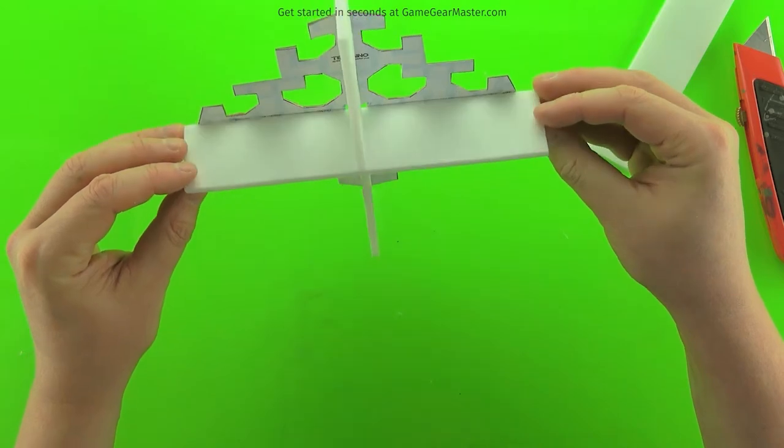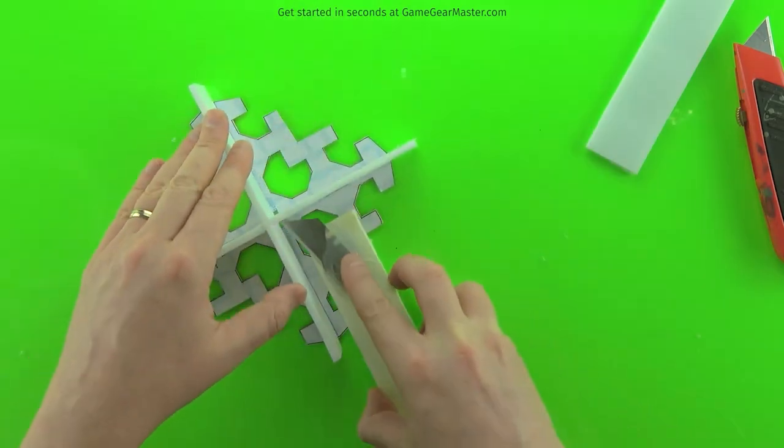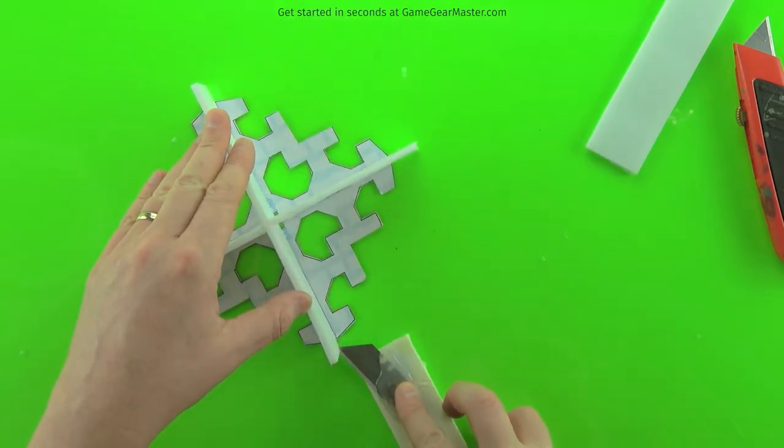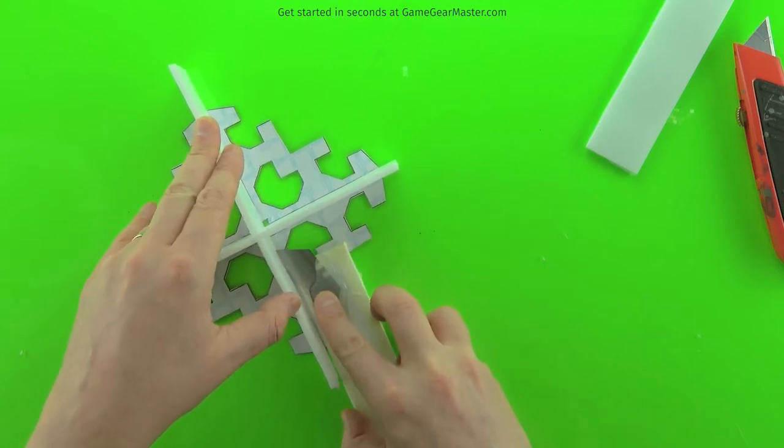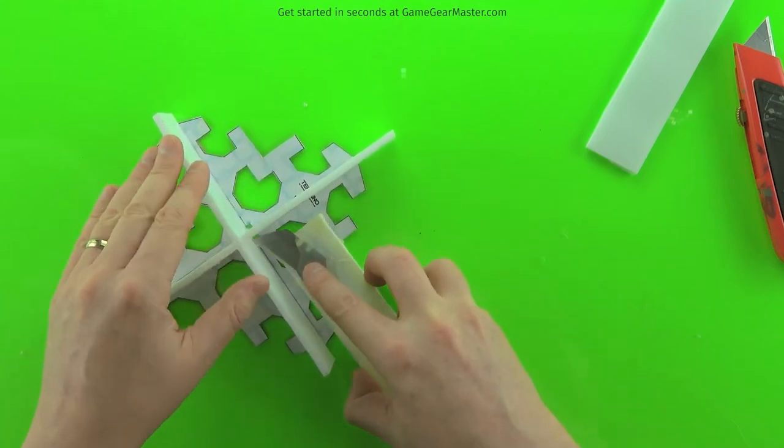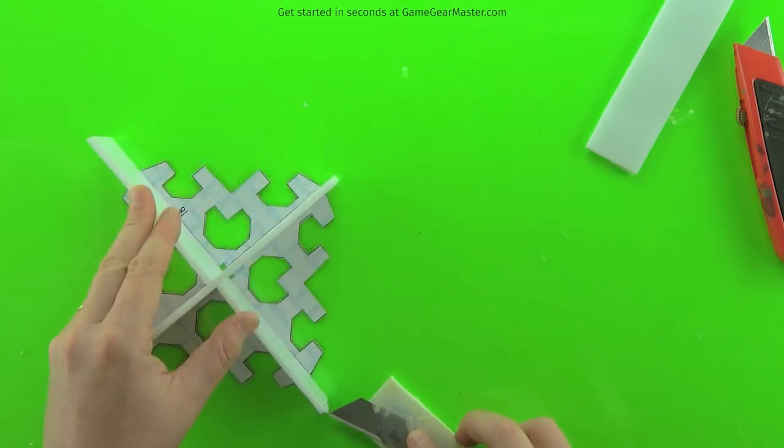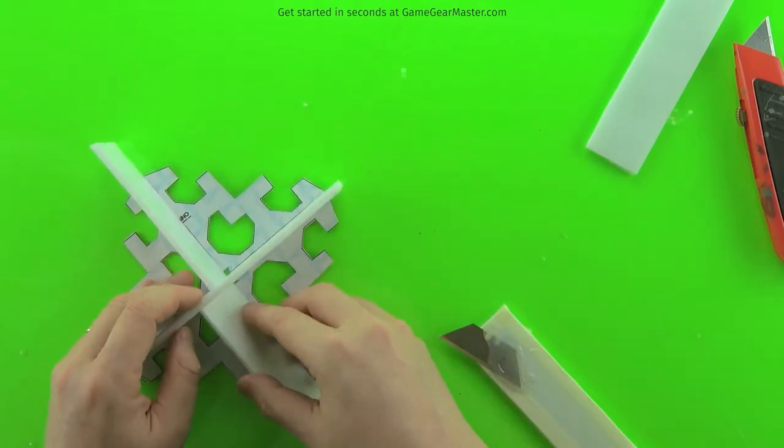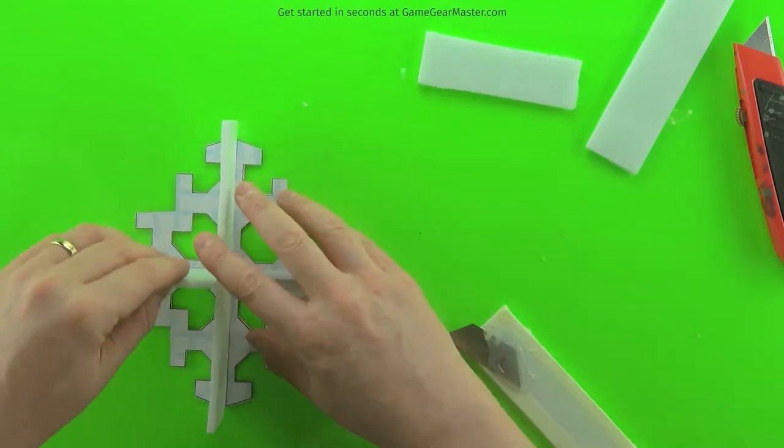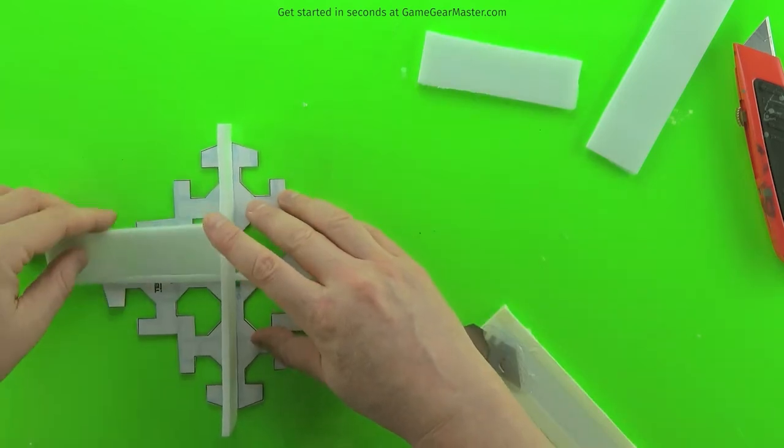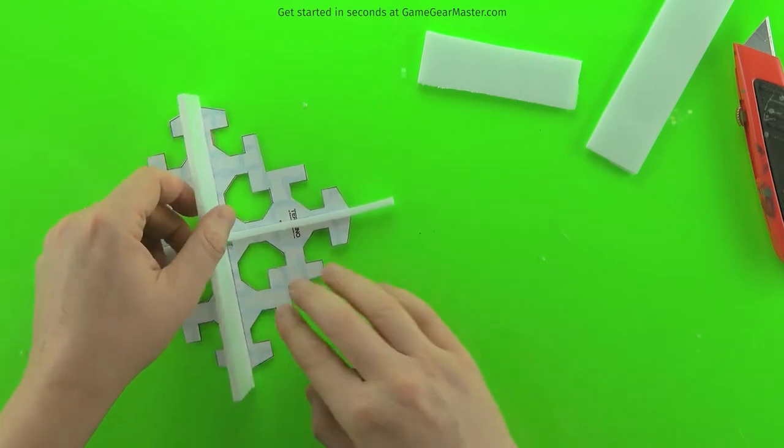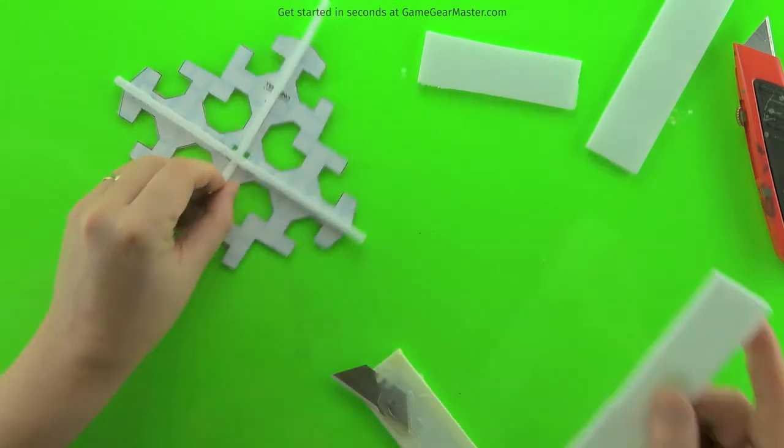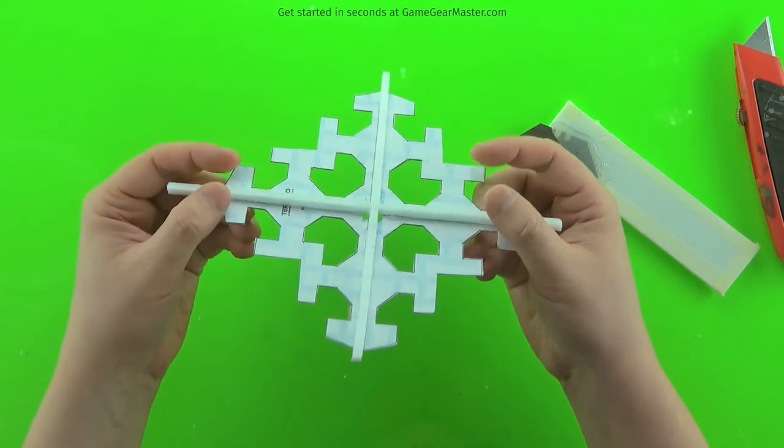And then we're going to use our single sheet depth cutter to cut off the excess, just like we did for the other one. There you go.